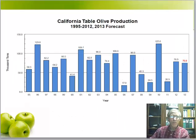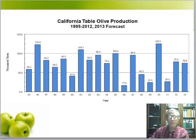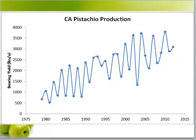This graph shows California table olive production from 1995 until 2013. Again, note the large swings in production over the years. Here is the example of pistachio — average yield in pounds per acre on the y-axis over 30 years. Note the large differences in yield between an on, or heavily cropping year, and an off, or lightly cropping year.